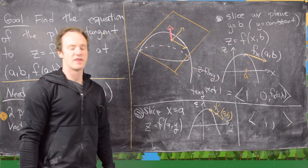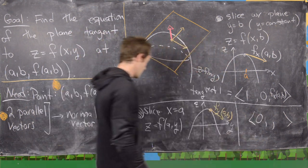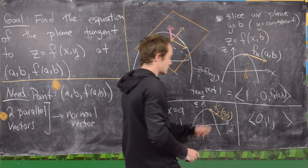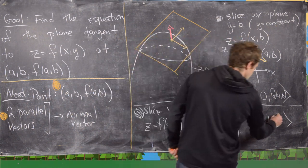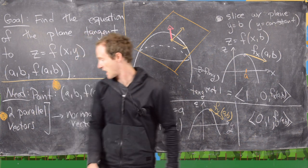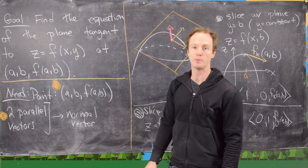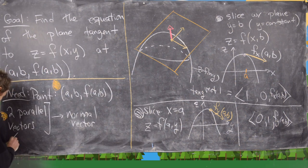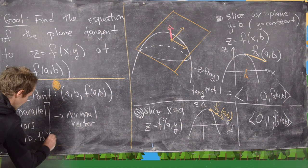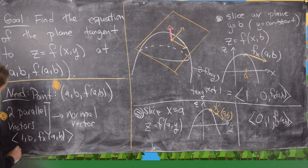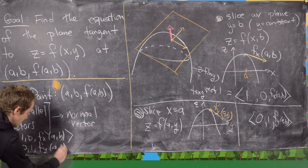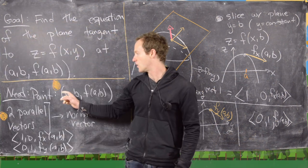From this we get our second tangent vector. The x part is not changing at all because we set x equal to a constant, the y part changes like 1, and the change of z over the change of y is given by f sub y of a, b. So our two parallel vectors are: vector one = (1, 0, f_x(a,b)) and vector two = (0, 1, f_y(a,b)).